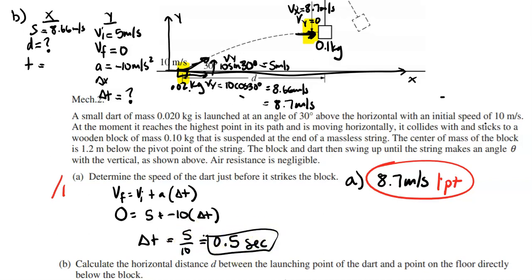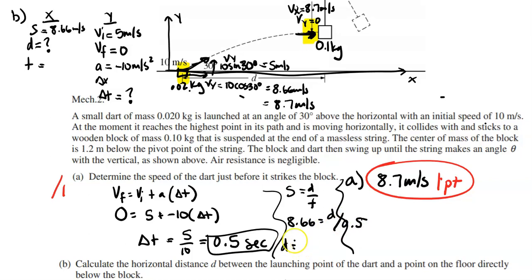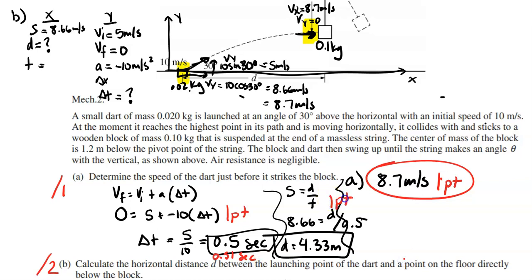Now using speed = distance/time in the x-direction: 8.66 = D/0.5, giving D = 4.33 meters. For the rubric — part B is worth two points: one point for the correct time (using G = 9.8 gives 0.51 seconds, either is fine), and one point for correctly applying speed = distance/time in x to get D = 4.33 meters. Using G = 9.8 gives 4.4 meters — both are acceptable.